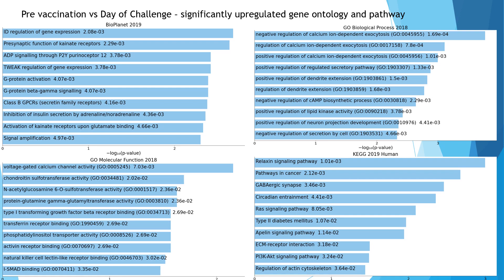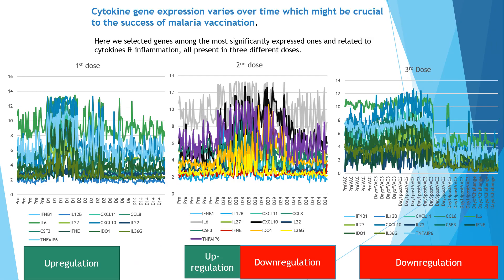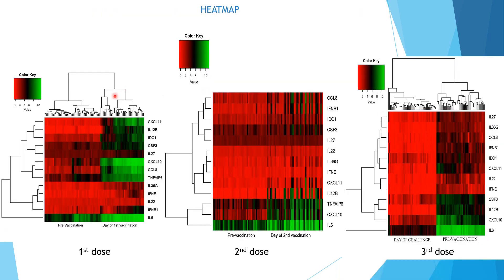Cytokine genes are mostly down-regulated after the third dose, while the up-regulated genes are mostly associated with regulation of calcium ion-dependent exocytosis or voltage-gated calcium channels. Looking at genes associated with cytokine and inflammation across all three doses: in the first dose, expression is up-regulated on the day of vaccination; in the second dose, it is both up- and down-regulated; but in the third dose, expression falls and is mostly down-regulated. This applies to all cytokine-related significant genes. A heatmap of the same also shows a clear distinction in how expression patterns vary from one group to another.